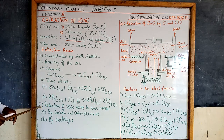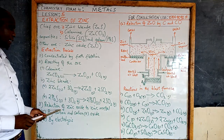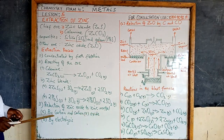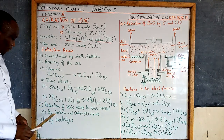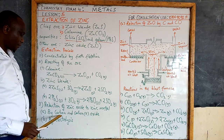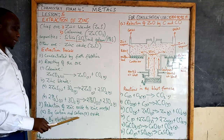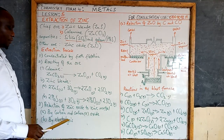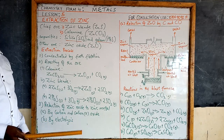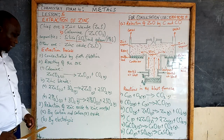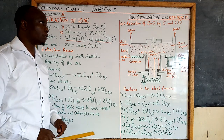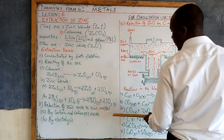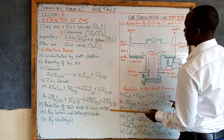The third step will be the reduction process of zinc oxide to zinc metal. The reduction can be done in two ways: first, by reduction using carbon and carbon monoxide (CO); or the other option is electrolysis. So first let's see how zinc oxide can be reduced to zinc metal using carbon and carbon monoxide.